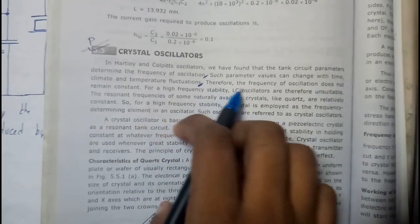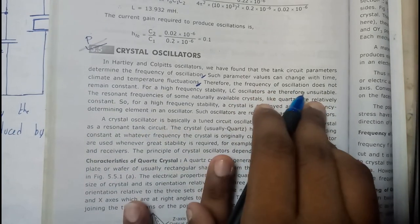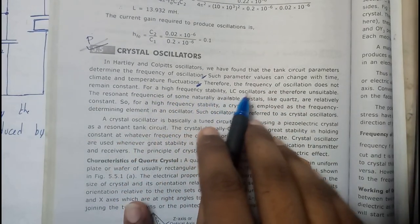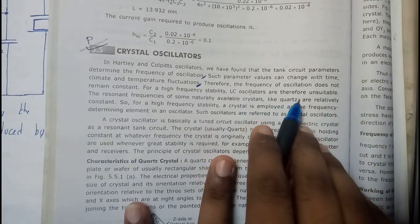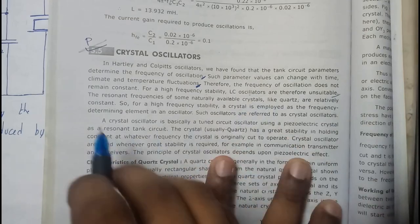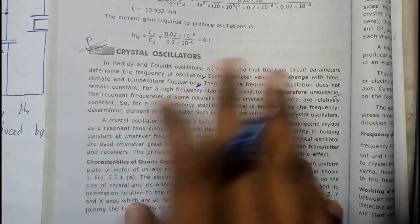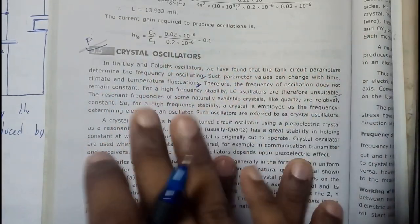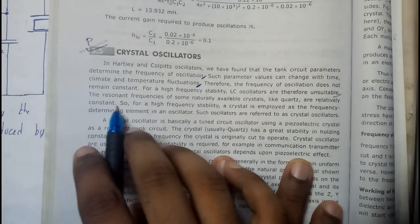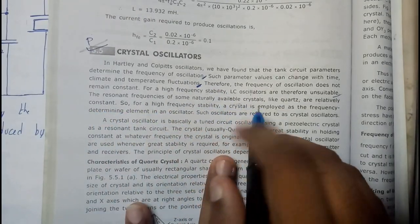Therefore, the frequency of oscillation does not remain constant. For high frequency stability, LC oscillators are unsuitable. They are not used properly; they do not have constant consistency. So to resolve that method in a natural way, crystals like quartz are used.